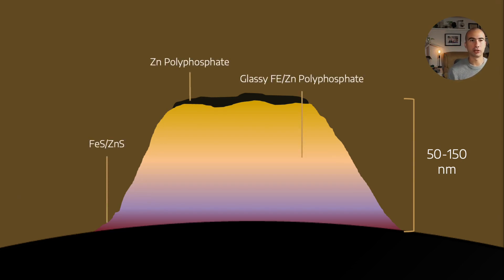Then we also talk about the other components to it. So generally, at the bottom, you have sort of a combination of iron, like an iron sulfide or a zinc sulfide, something like that. Then in the middle, you get this glassy sort of zinc polyphosphate combined with a little bit of the metal as well, so a bit of iron in there. And then on top is a pure sort of zinc polyphosphate.